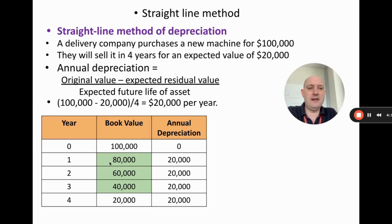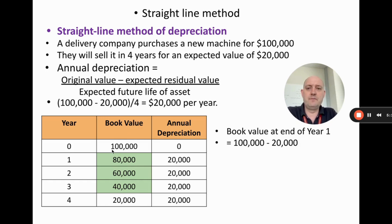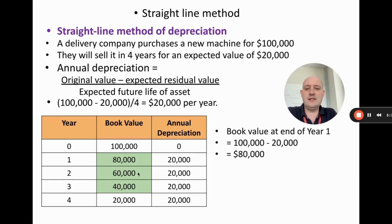We can then calculate the book value at the end of each year. The book value is the value of the asset on the balance sheet or in the books. The book value at year zero — the beginning — is $100,000. This asset depreciates by $20,000 during the year, so at the end of year one the value is $80,000. At the end of year two, minus $20,000 gives $60,000. Then $40,000, and finally $20,000. Every year the annual depreciation is exactly the same — that's why we divided by four.